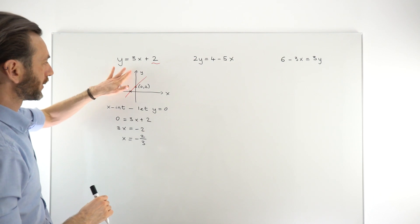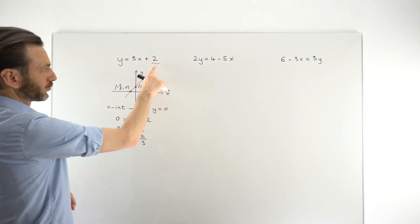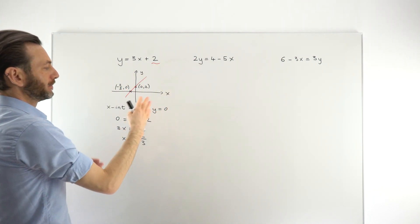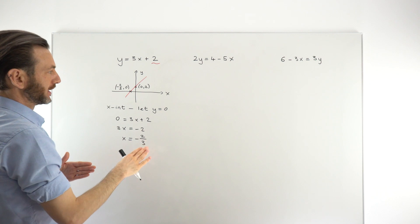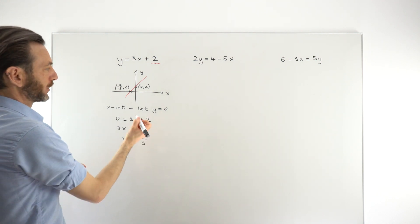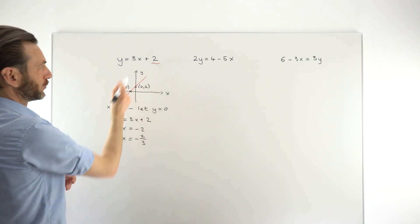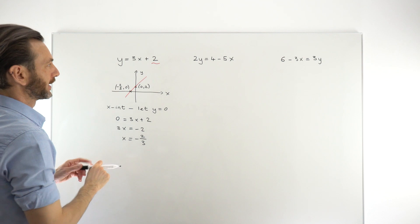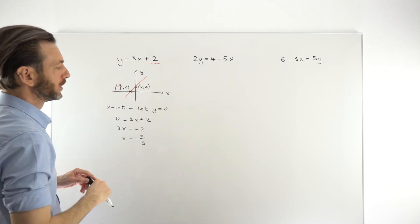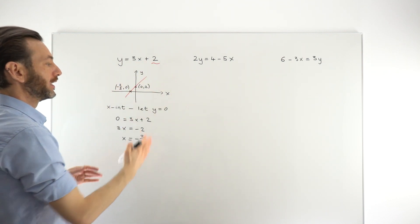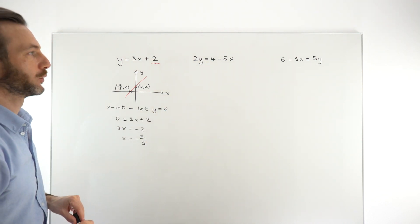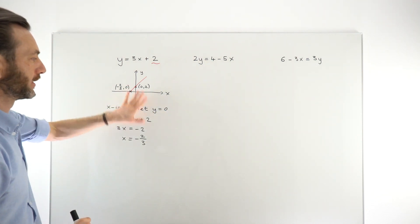In that case, we could have just read off the y-intercept, which we kind of did, but then we confirmed it as well by putting 0 in for x, and we get y equals 0 plus 2, which is 2. Now let's take that over to the other examples and see how we can adapt this technique.